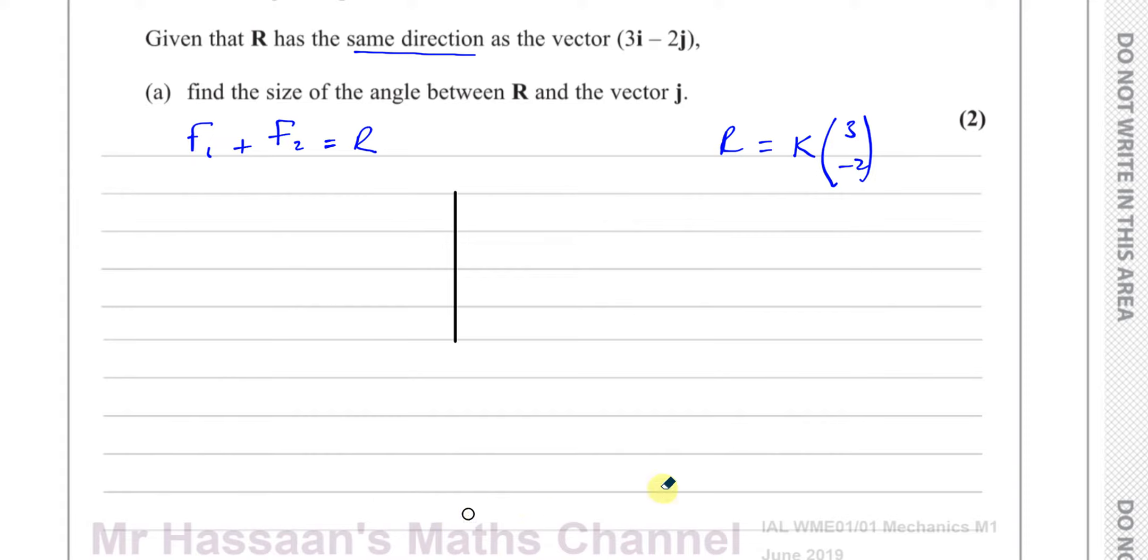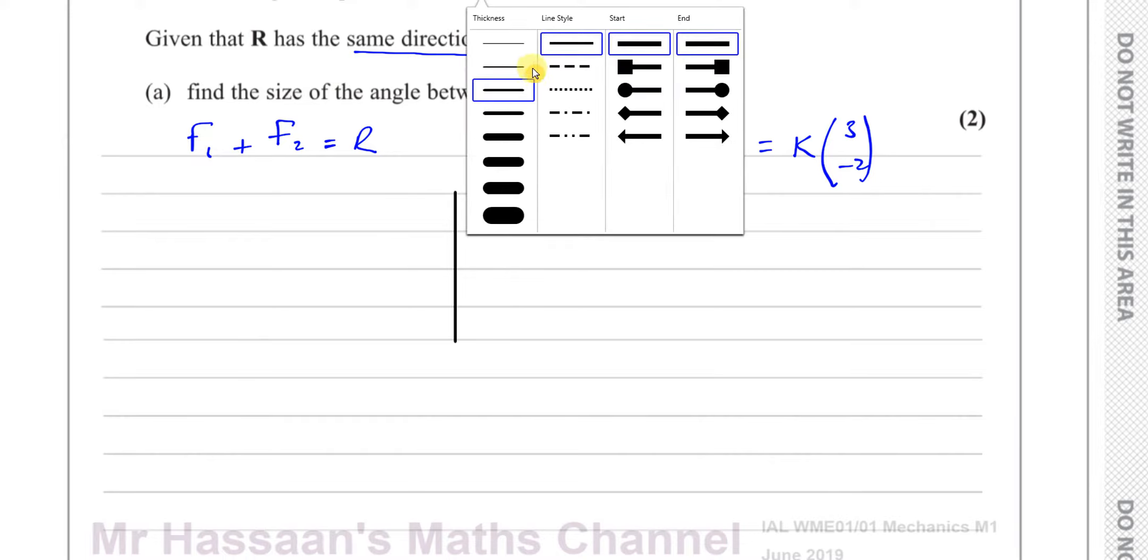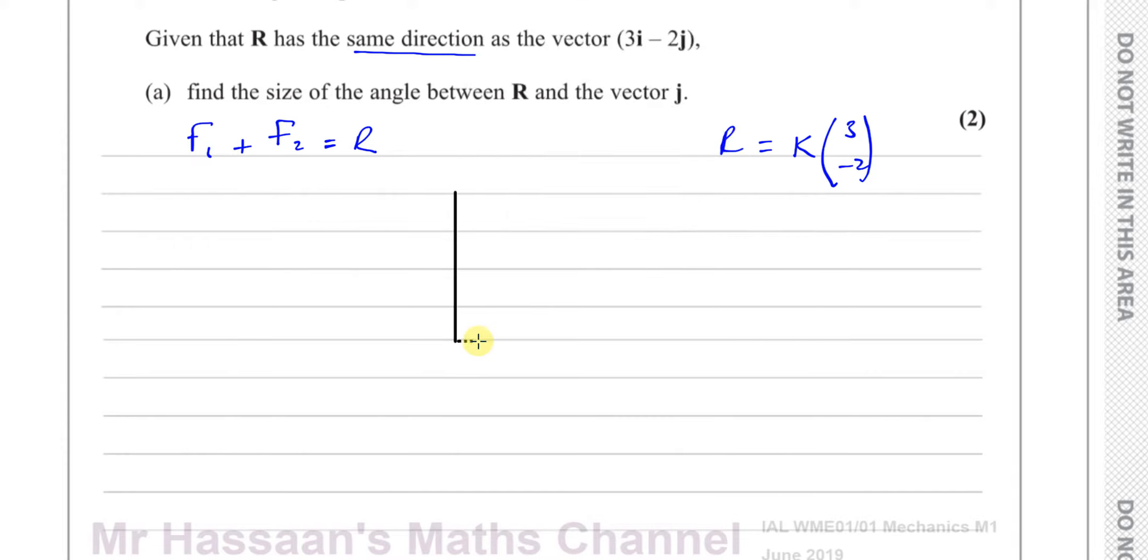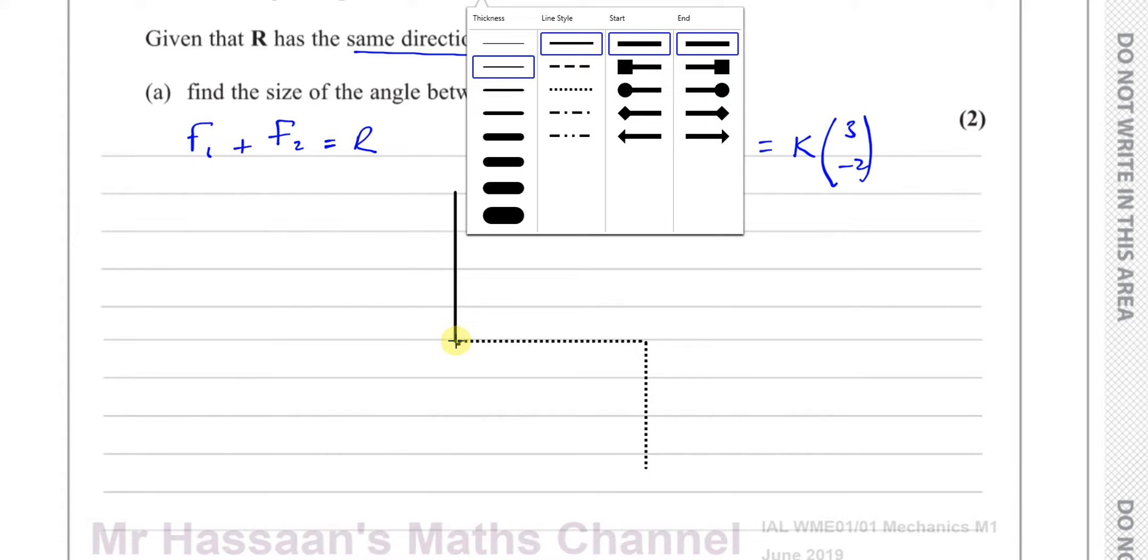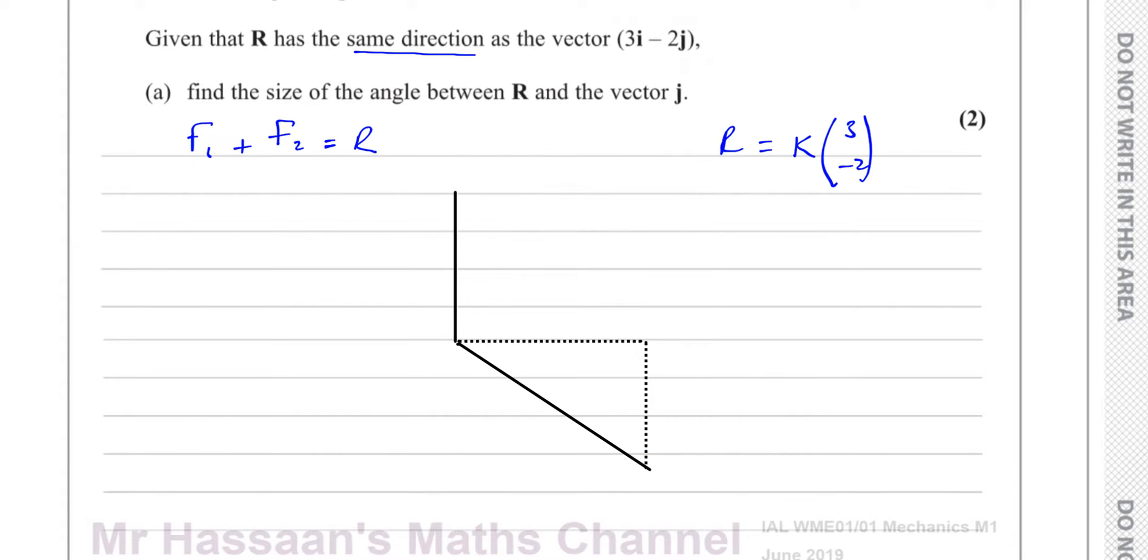So j is in this direction. We don't need to know the magnitude of R to calculate this question because what we need to know is its direction, and this is enough for us to know its direction. Now the direction is the same direction as 3i minus 2j. 3i minus 2j is basically something like this: 3 units to the right and 2 units down. So it's going to go in the same direction as something like this, 3i to the right and 2i down. I'm just making a rough sketch here.